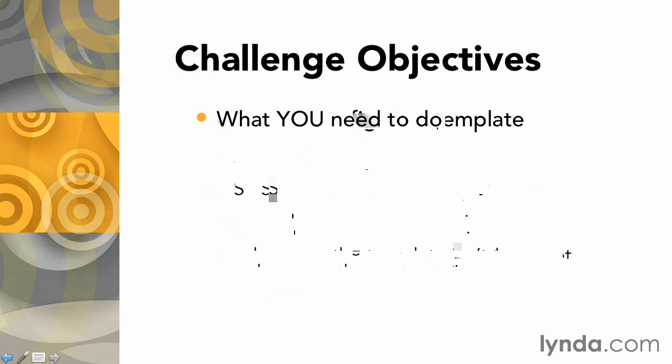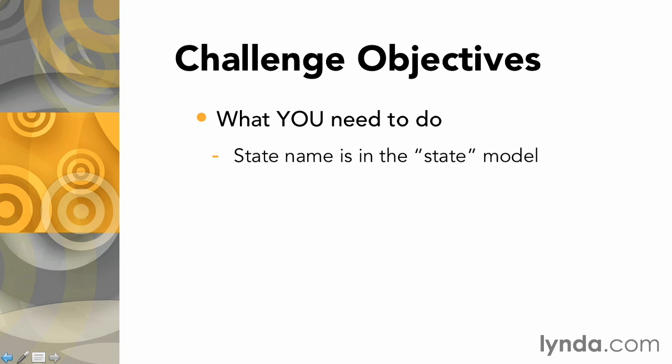To get the state name to appear, have it reference a model property called state. It should have a class name of state flower style, so some basic styling will be applied.